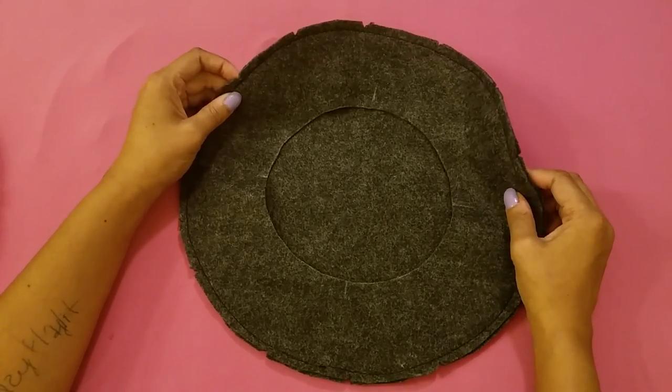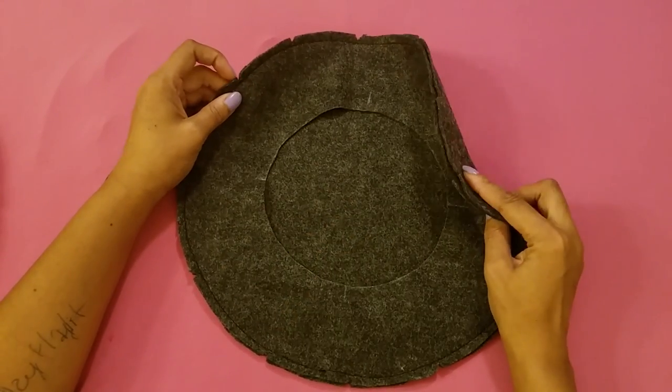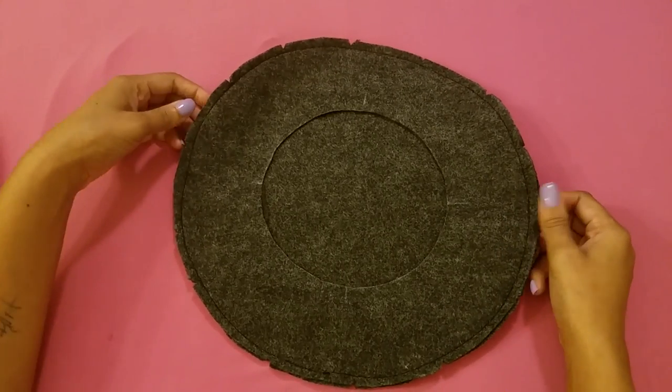After I sewed my hat, I cut little notches around the circle. This is not necessary since it is on a pretty narrow hem as it is.